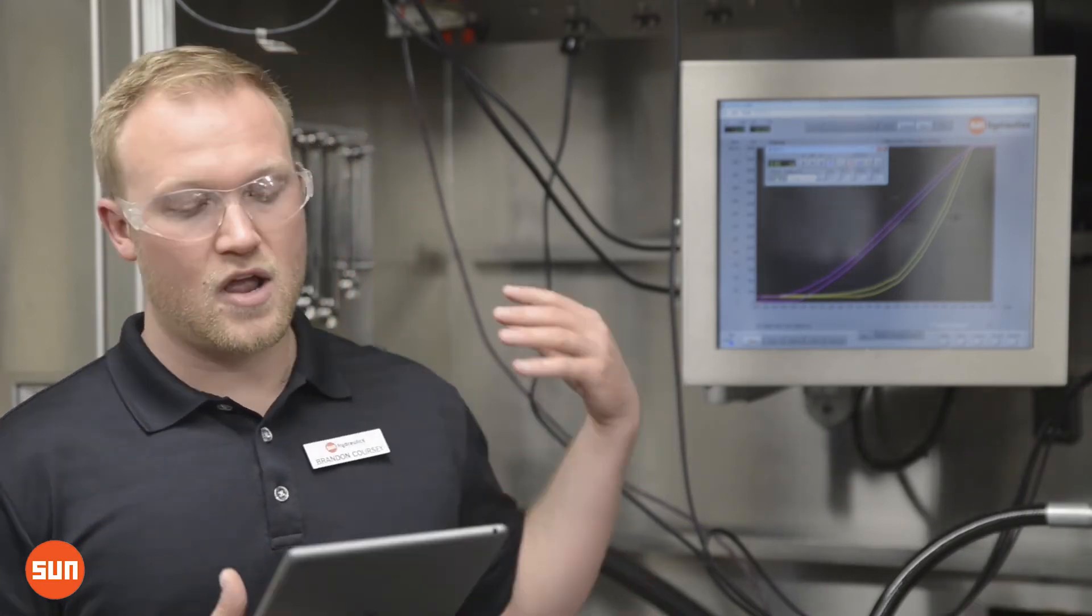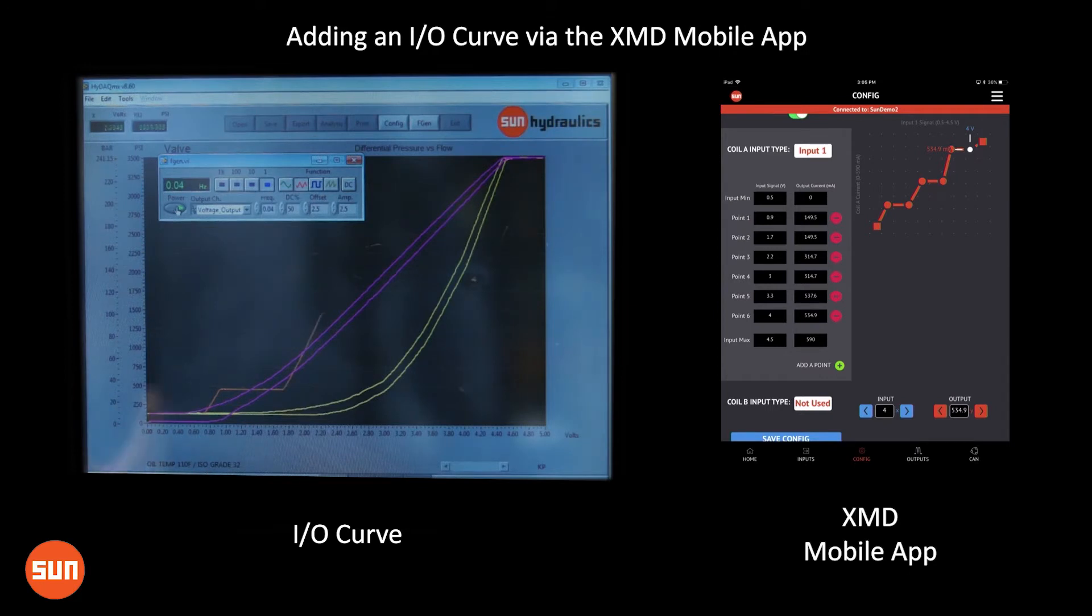When we run this application, you'll see just how precise this output can be. It is a current regulated output, so we're always constantly reading that current feedback to give us great control resolution of Sun's proportional valves. We'll see here from this hysteresis curve just how repeatable it is.